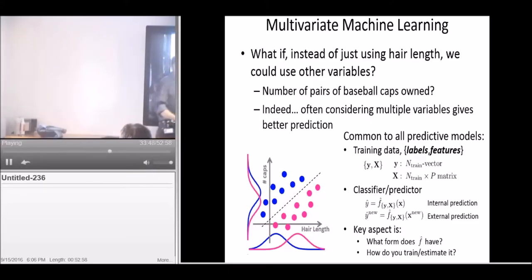This is a very generic thing that we're always trying to map from the data, the features, to these labels. It might be man-woman, it could be some sort of disease outcome. This works for classification, when we're trying to predict something that's binary or discrete, or prediction, where we could be trying to predict disease duration, time to relapse, what have you.